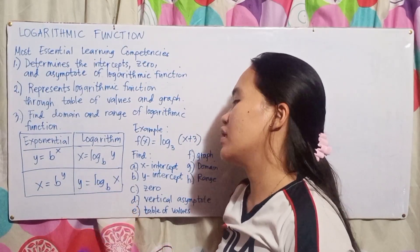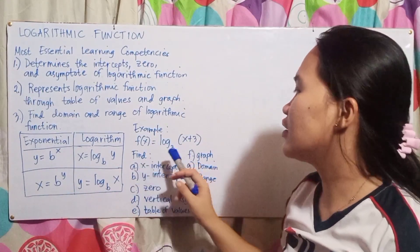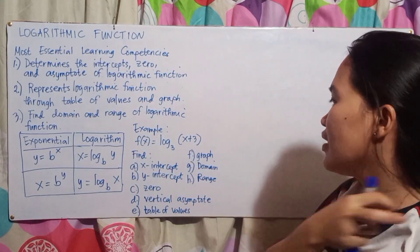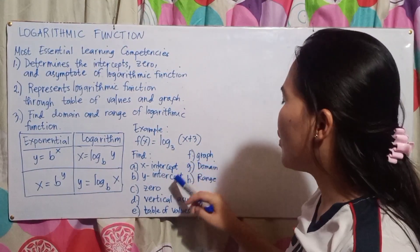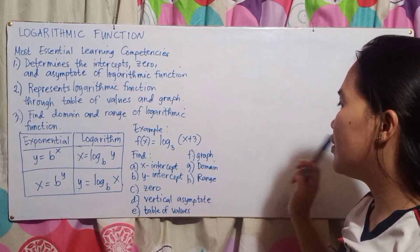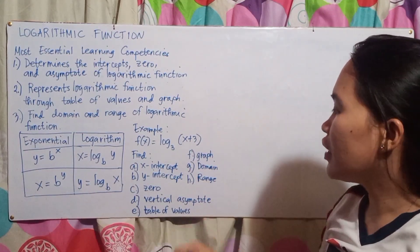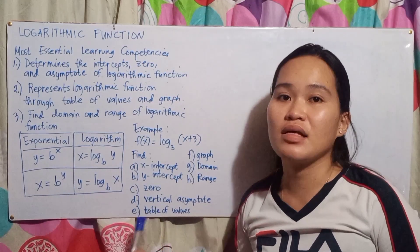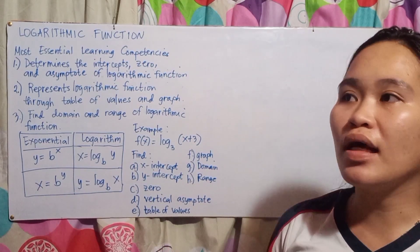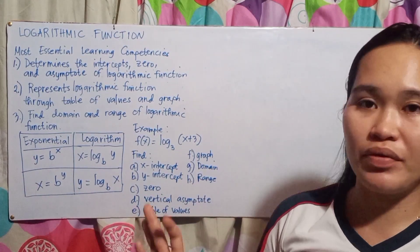If in exponential form x equals b raised to the power of y, in logarithm form it becomes y equals log base b of x. Example: f(x) = log₃(x + 3). Find the x-intercept, y-intercept, zero, vertical asymptote, table of values, graph, domain, and range. Take note: a logarithm has a vertical asymptote but no horizontal asymptote, unlike exponential which is the opposite.